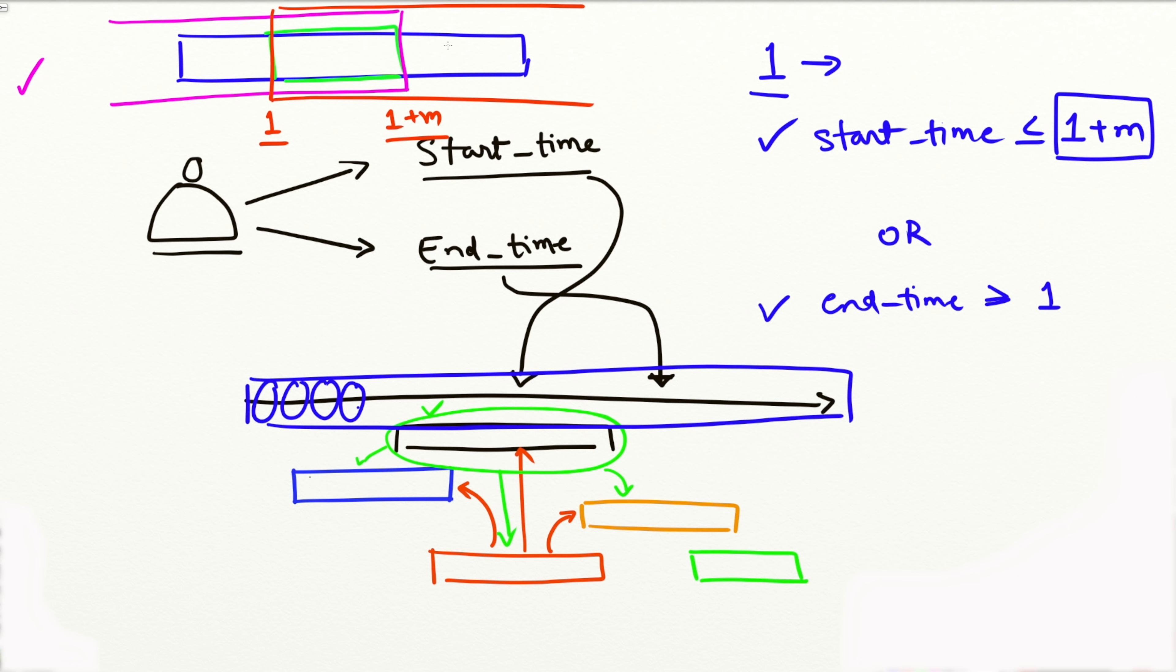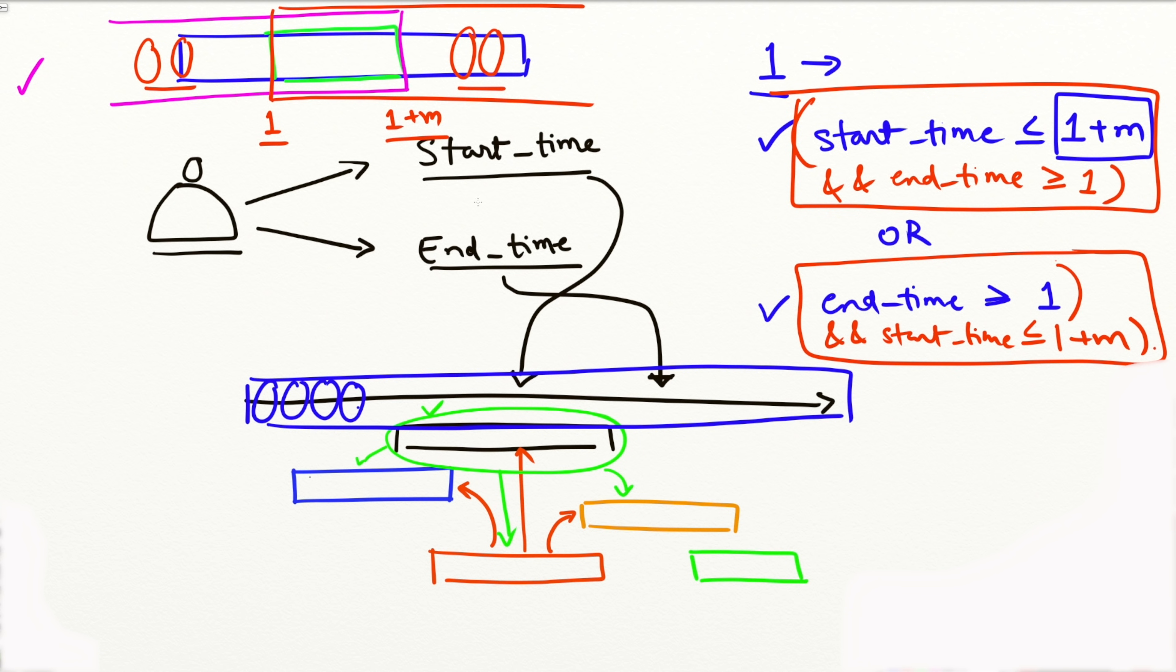But actually this is not enough. Because there might be entries to start and end after our end time and who start and end before our start time. So we have an end time greater than equal to one, and over here we have a start time less than equal to one plus M. And if any of these two conditions are satisfied, then we are good.